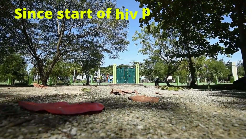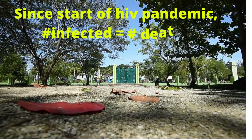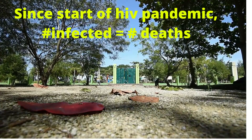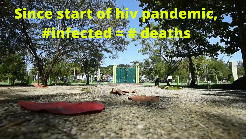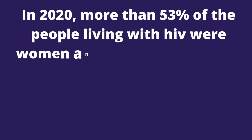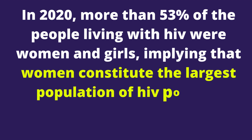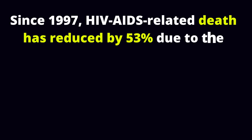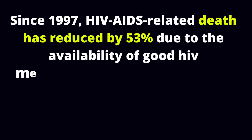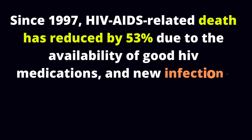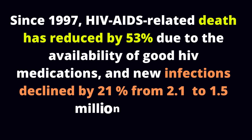This implies that since the start of the HIV epidemic, the number of people living with HIV today is close to the same number of people who have died of HIV-AIDS. In 2020, more than 53% of the people living with HIV were women and girls, implying that women constitute the largest population of HIV-positive living. Since 1997, HIV-AIDS-related death has reduced by 53% due to the availability of good HIV medications, and new infections declined by 21% from 2.1 to 1.5 million people.